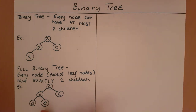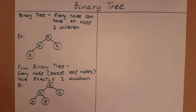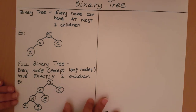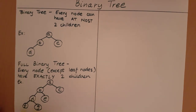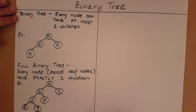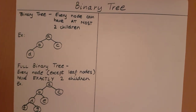Even if node D had two children, say F and G, this is also a full binary tree because D, which is not a leaf node, again has exactly two children. Now let's look at what a balanced binary tree is.